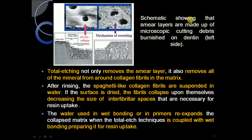The smear layer is made up of microscopic cutting debris burnished on the dentine. Total etching not only removes the smear layer, it also removes all of the mineral from around the collagen fibers in the matrix. After rinsing, the spaghetti-like collagen fibrils are suspended in water. If the surface is dried, the fibrils collapse upon themselves, decreasing the size of interfibrillar spaces necessary for resin uptake. The water used in wet bonding or in primers re-expands the collapsed matrix when the total etch technique is coupled with wet bonding, preparing it for resin uptake.